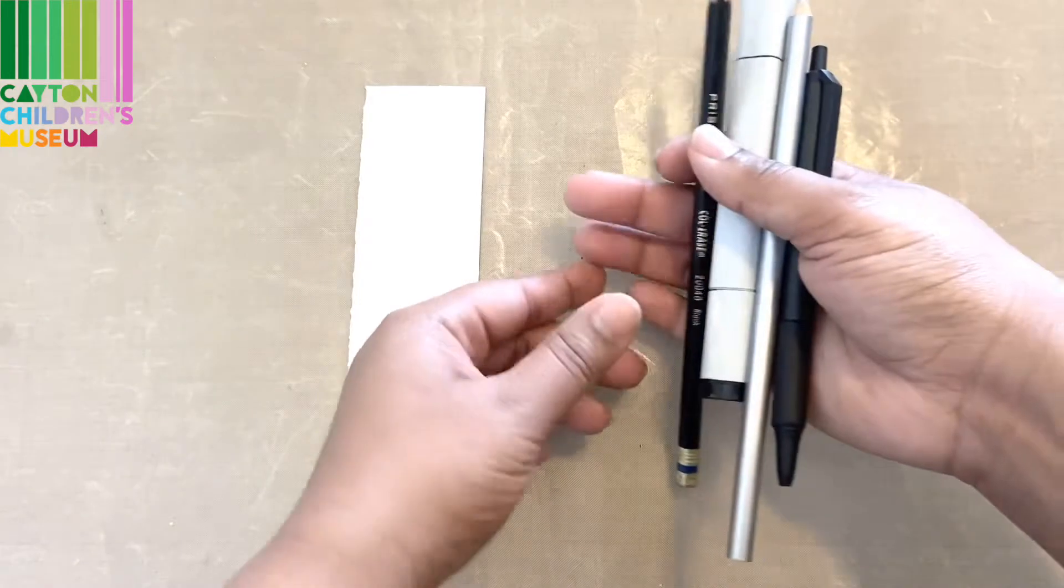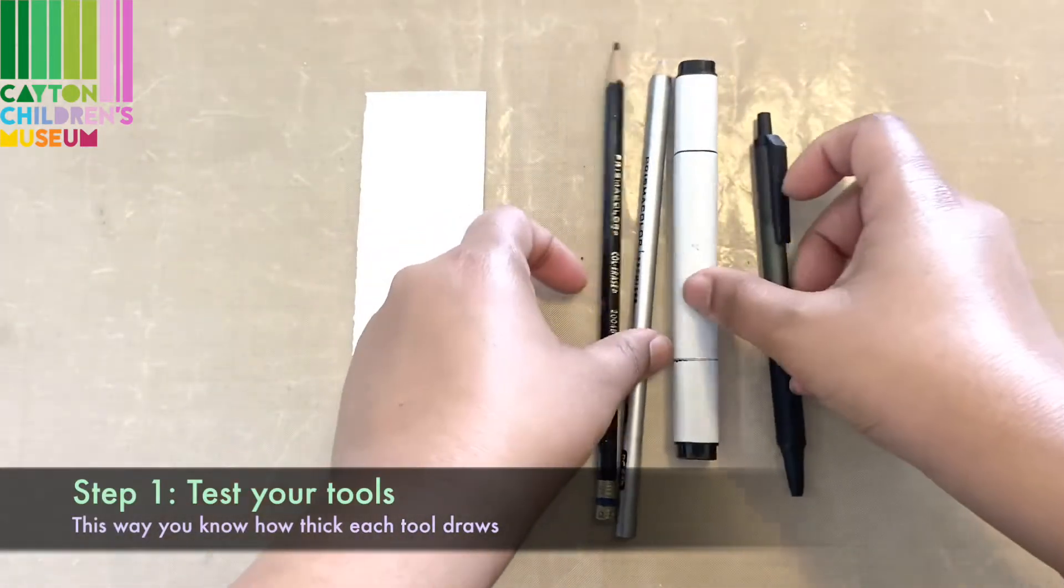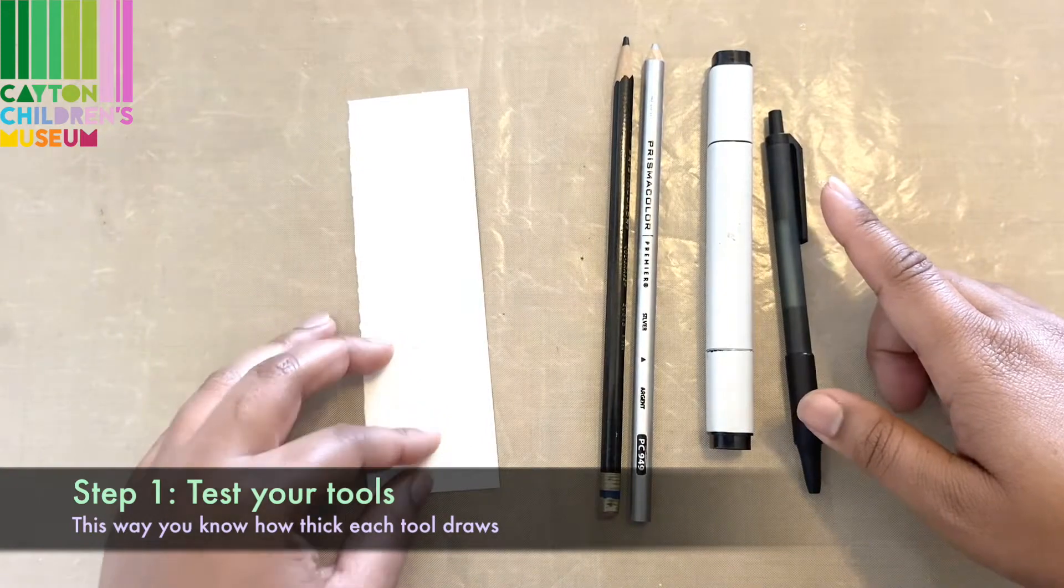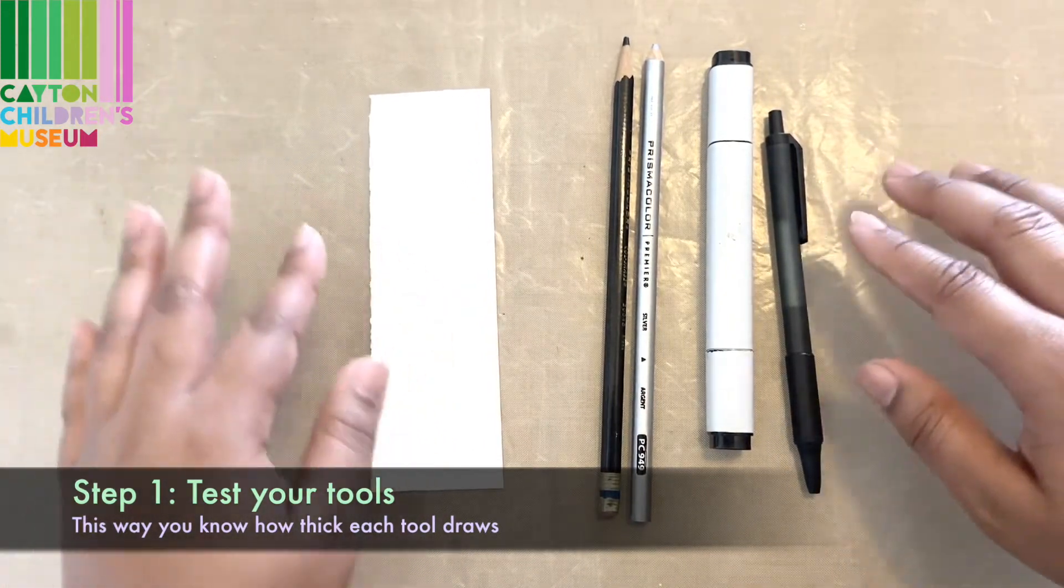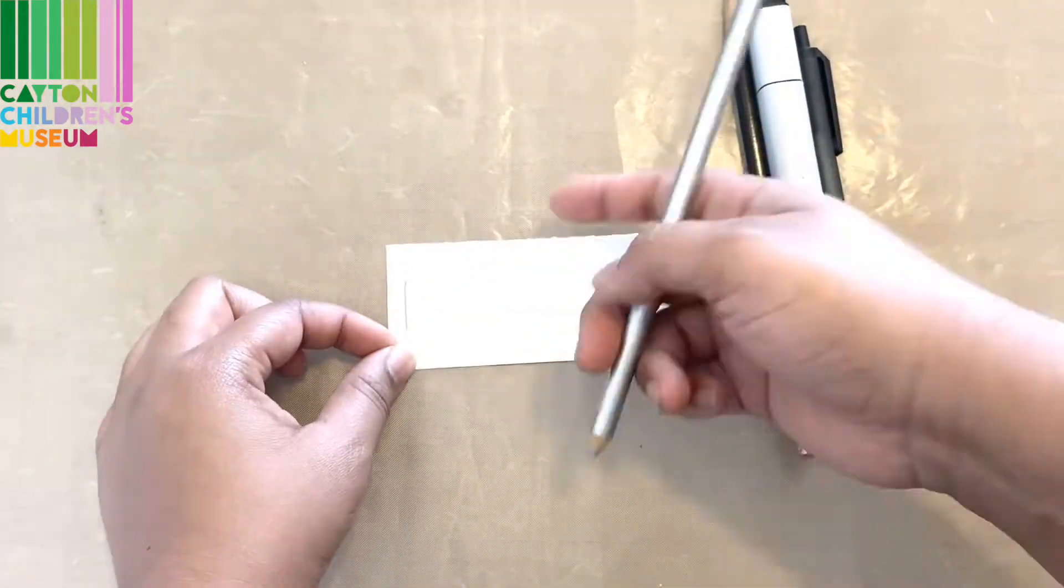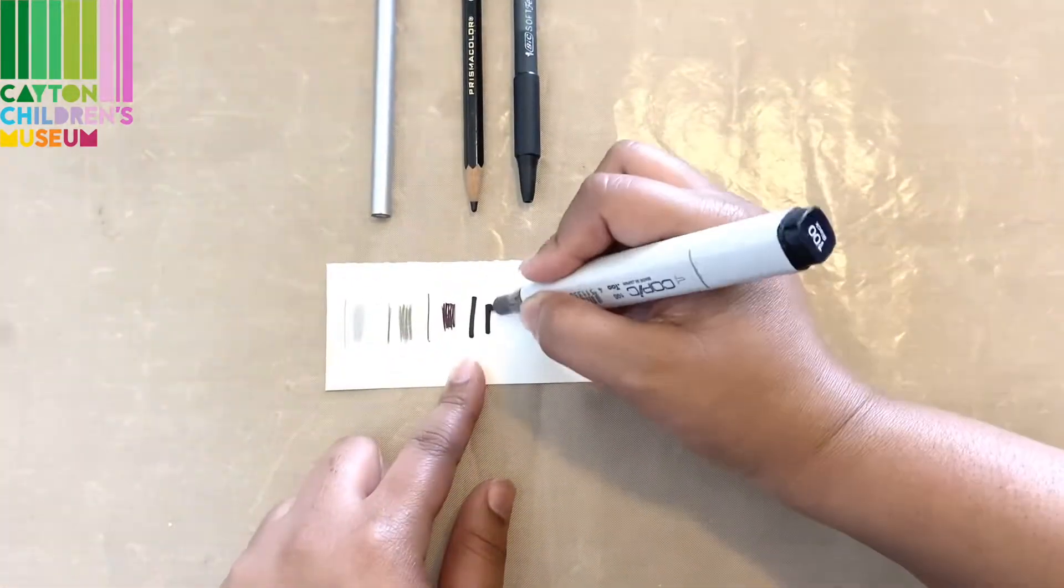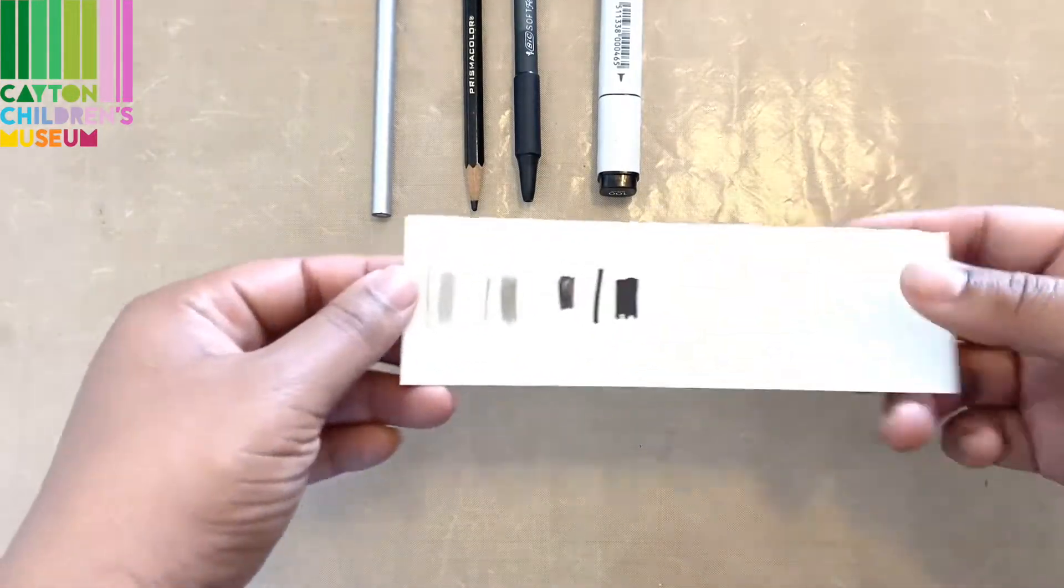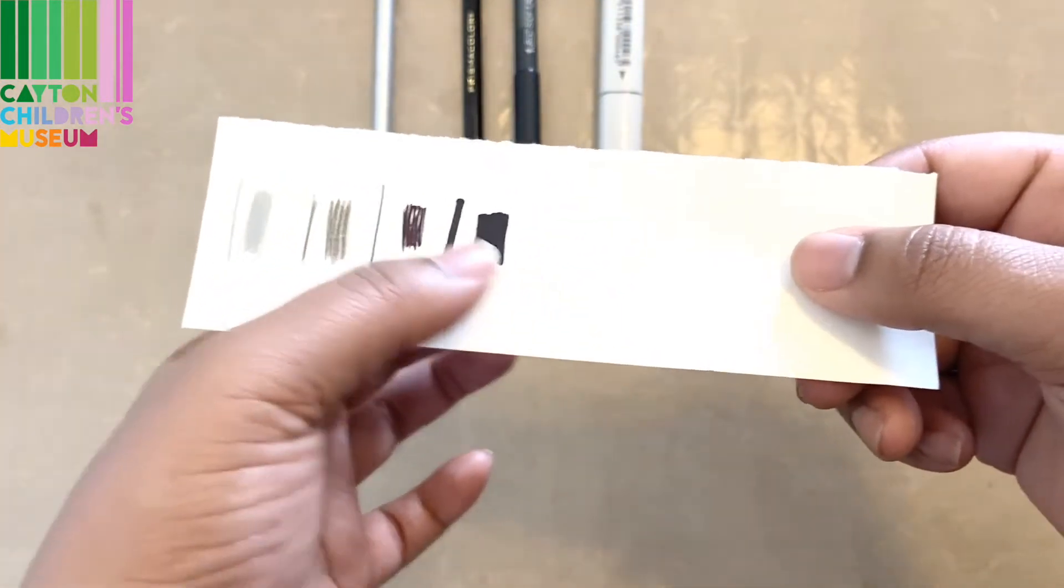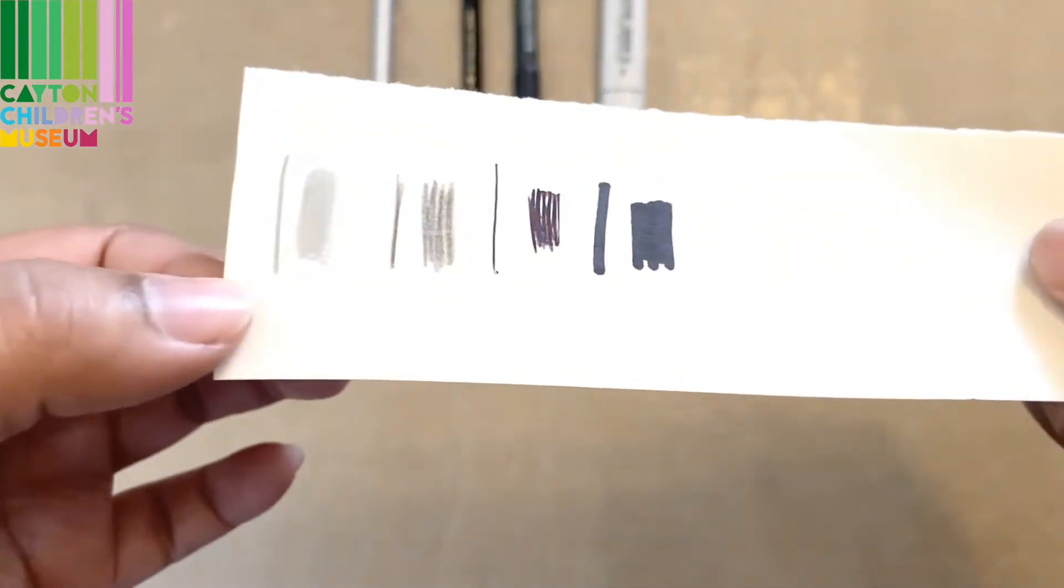One thing I like to do before I get started drawing is taking whatever materials I'm coloring or drawing with, using a scrap piece of paper, and just doing a couple of scribbles. This way I can figure out and know the thickness of each coloring tool. Now I know what color each tool will color, the thickness of each one, and how dark they are.